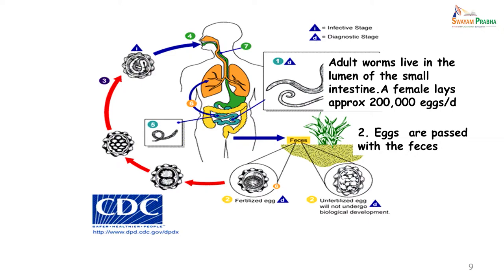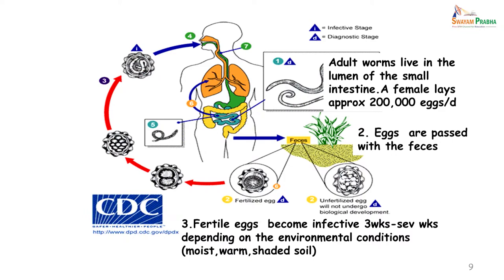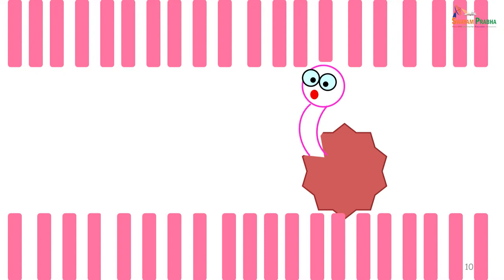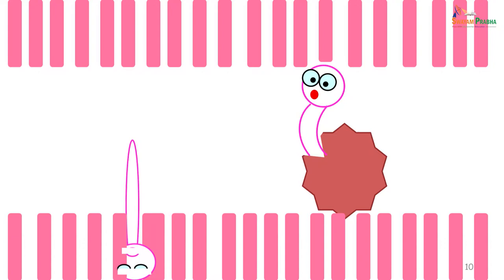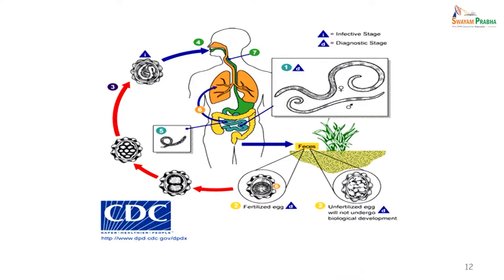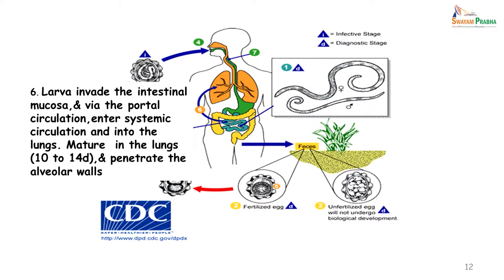The fertile egg becomes infective about 3 weeks after it has lived in the soil, depending on environmental conditions — it needs moist, warm, shaded soil. Once it undergoes maturation it is ingested by the human host with contaminated food and water. It then goes through the stomach into the intestine where the larva hatches, burrows through the intestinal villi, enters the portal circulation, and then the systemic circulation into the lungs.